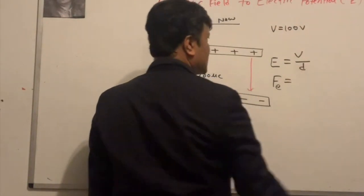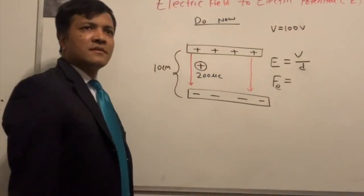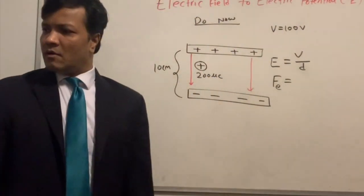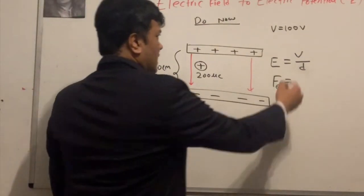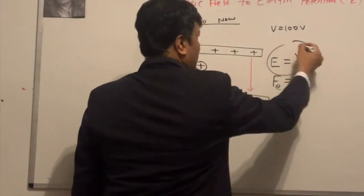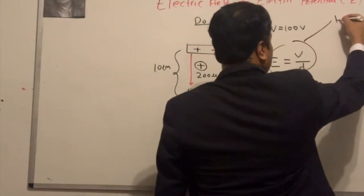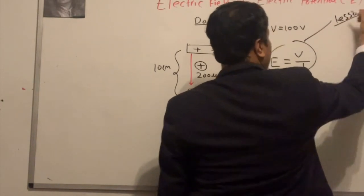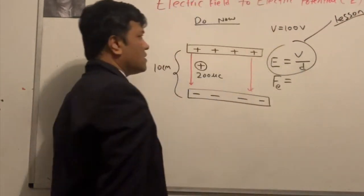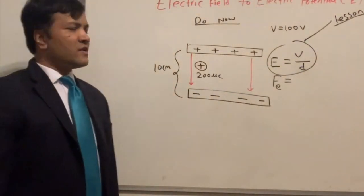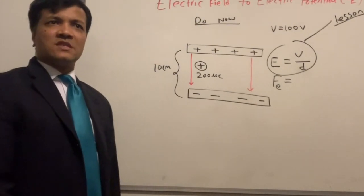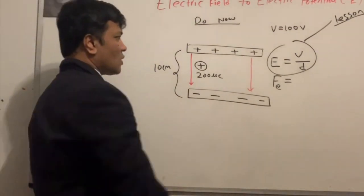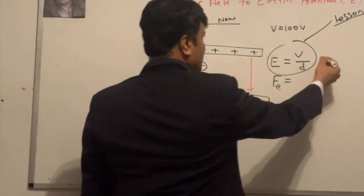So I'm going to use E = V over d. Where did that come from? I never taught you that — so today I'm going to teach you how we get V over d. But let's continue and finish the calculation first.